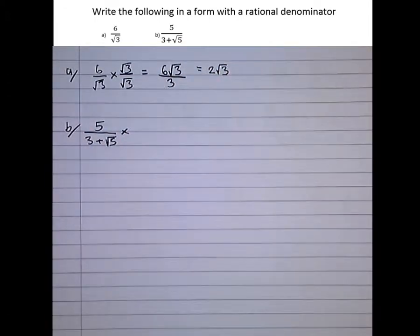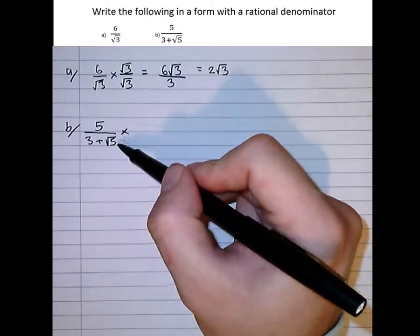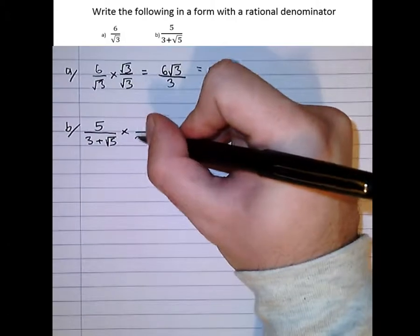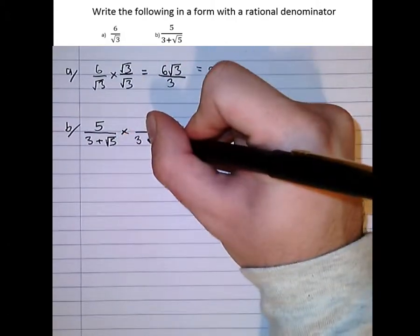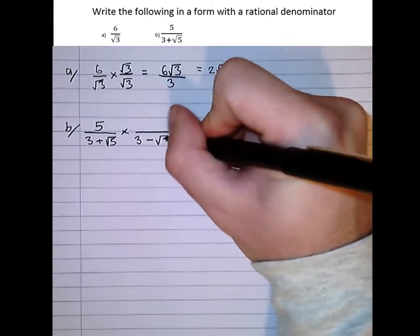So what we need to do here is times by the conjugate of the surd. So it's not as simple as before, just multiplying by root 3 over root 3. We need to multiply by the conjugate of the surd for more complicated ones like this. Now, the conjugate of a surd is just the surd part with a sign changed. So the conjugate of 3 plus root 5 is 3 minus root 5.